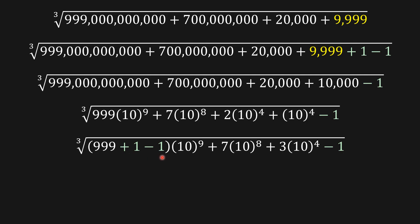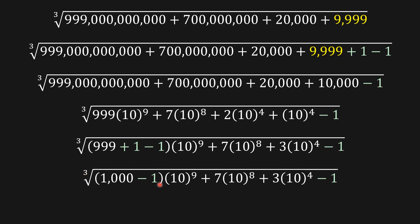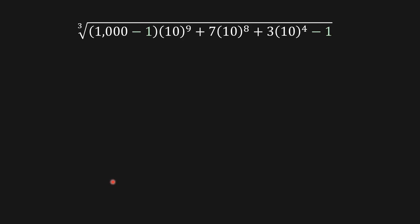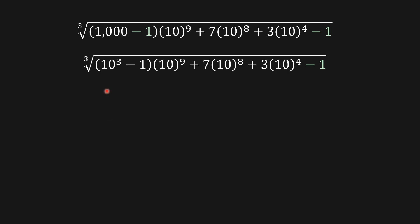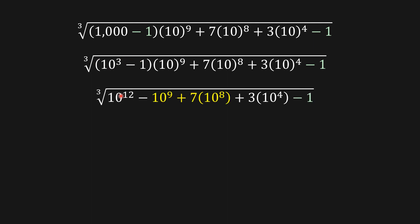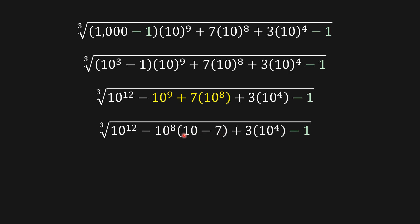So from here, nine hundred and ninety-nine becomes a thousand minus one, and a thousand is ten to the power of three. Now I multiply ten to the nine times this, so we get ten to the power of twelve minus ten to the power of nine, plus the remaining terms. I factor ten to the eight, giving ten to the eight times ten minus seven. Ten minus seven is three, so we have three times ten to the eight.